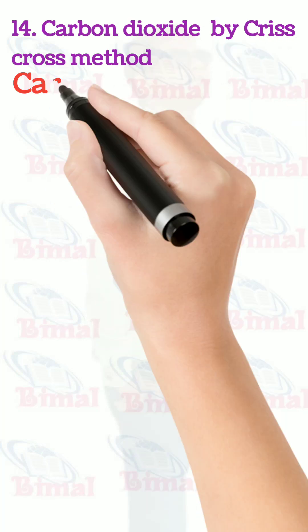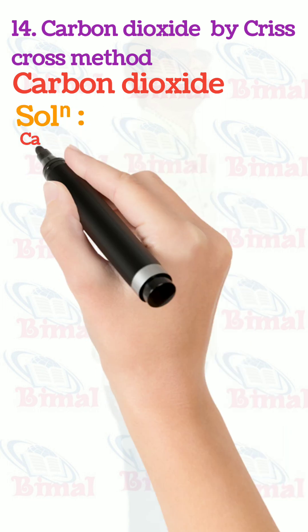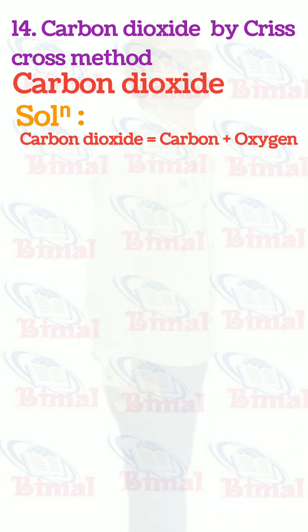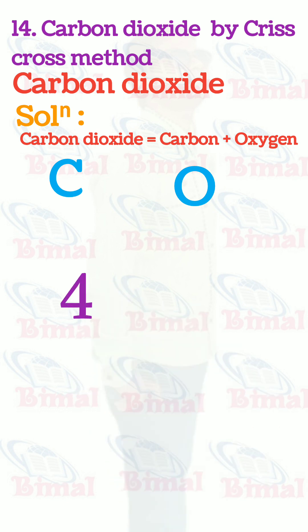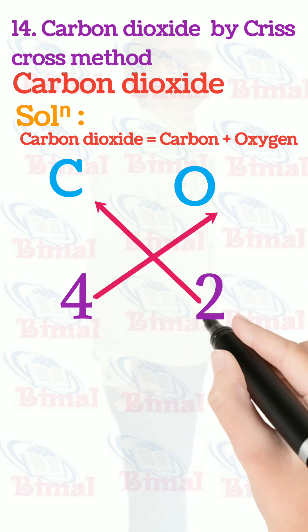Molecular formula of carbon dioxide by the crisscross method. Carbon dioxide equals carbon plus oxygen. The symbol for carbon is C, and the symbol for oxygen is O. The valence for carbon is 4 and the valence for oxygen is 2. After applying the crisscross method here,